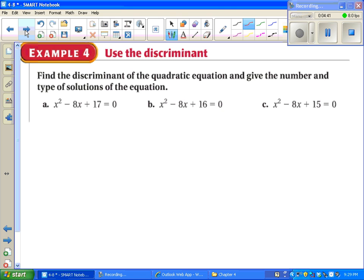So for example 4, we're just figuring out the discriminant. So for A, B, and C, we're just going to figure out b squared minus 4ac and use that information to say how many solutions there are and what type. Type means real or imaginary. So try that for A, B, and C. See if you get the same numbers and answers as I do.